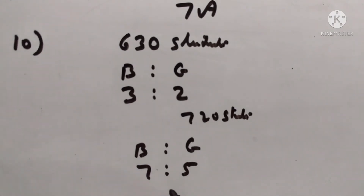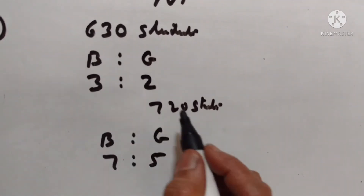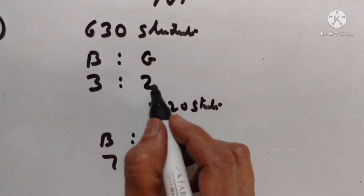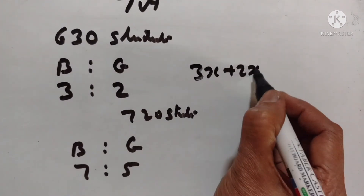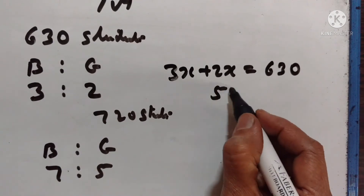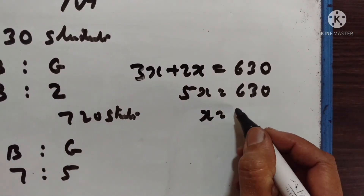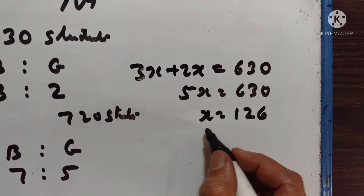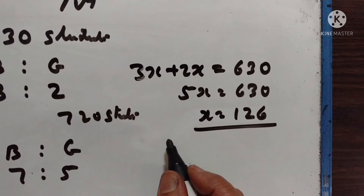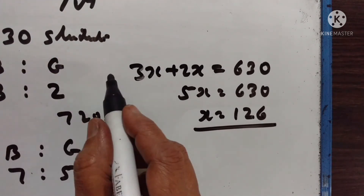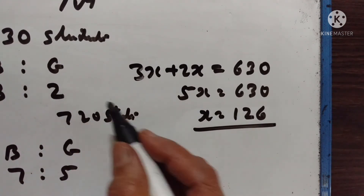Find the number of boys. Let the number of boys be 3x and the number of girls be 2x. So 3x plus 2x is equal to 630. 5x is equal to 630, so x is equal to 126. The initial number of boys is equal to 3 into 126, and number of girls is equal to 2 into 126.